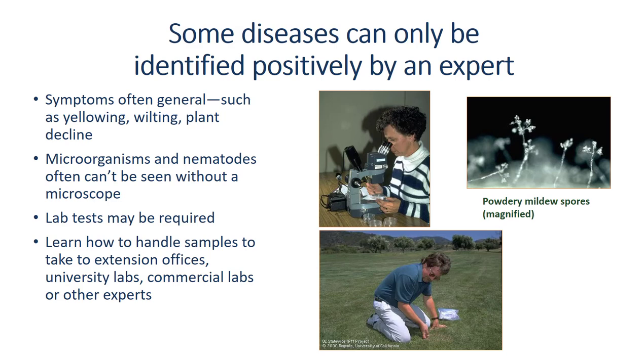Because the microorganisms causing plant diseases are so small, it is often difficult to identify the cause of the injury in the field. Microorganisms often live inside the plant and cause general symptoms such as wilting that can be caused by a variety of organisms or abiotic factors. Some plant pathogens can only be seen with a microscope or may require a laboratory test to positively identify them. You may need to take samples to your extension office or to other experts to diagnose the cause.